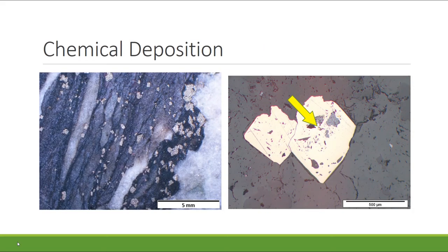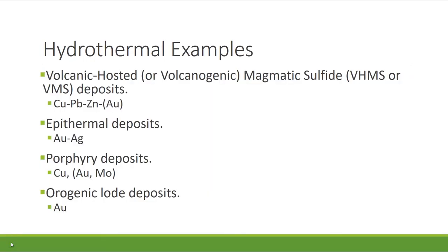In this example from the New Celebration orogenic gold deposit in Western Australia, gold transported as a bisulfide complex in hydrothermal fluids reacted with magnetite in the dolerite host rock to form gold-bearing pyrite. The image on the left shows disseminated pyrite in a sheared vein. The image on the right is a magnification of two pyrite crystals that contain tiny gold grains. Examples of hydrothermal deposits include volcanic-hosted massive sulfide deposits, which form around black smokers and are valuable sources of copper, lead, zinc, and gold; epithermal deposits, which form some of the richest gold and silver deposits in the world; porphyry copper deposits; and orogenic lode gold deposits.